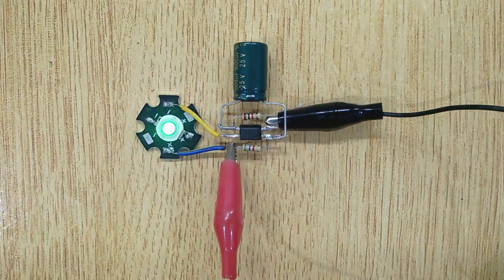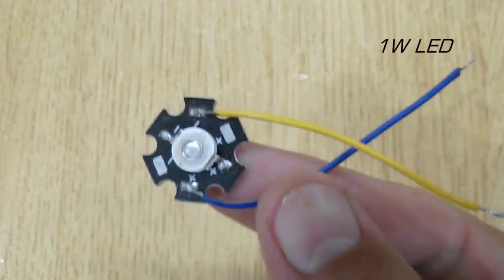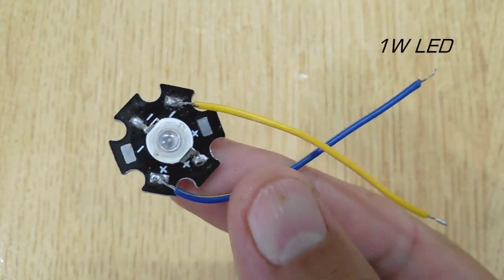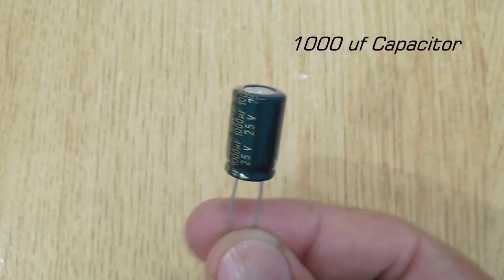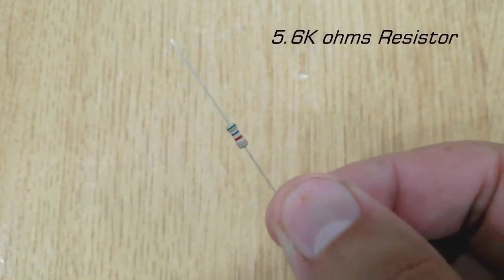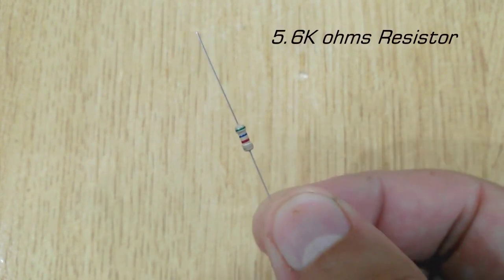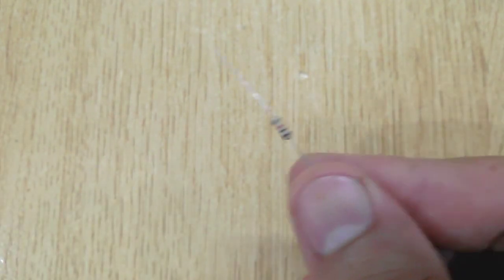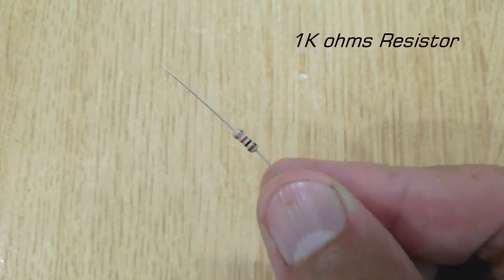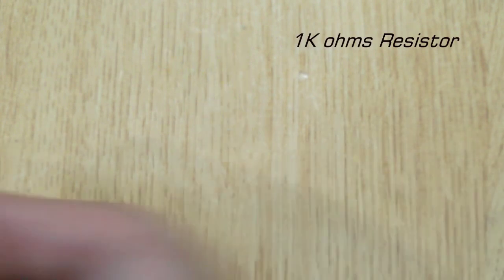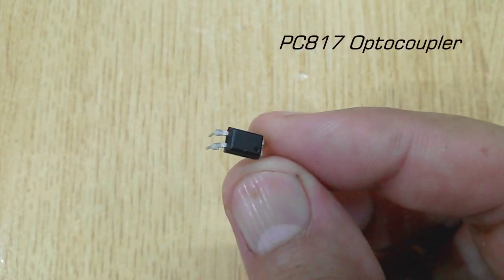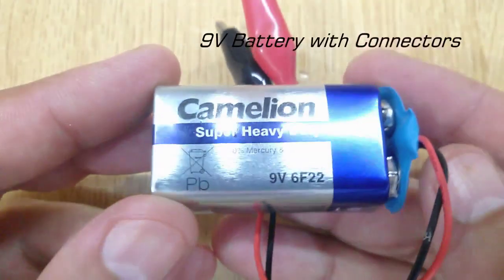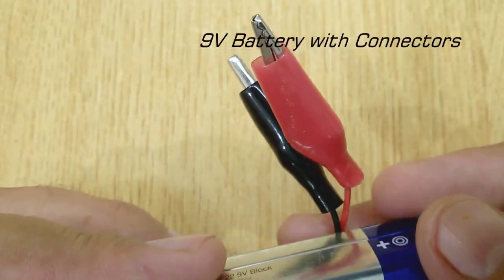To make this super LED strobe light, you will need: 1 watt LED, 1000uF capacitor, 5.6K ohm resistor, 1K ohm resistor, PC817 optocoupler, and 9 volt battery with connector.